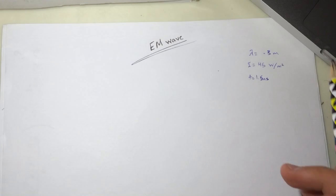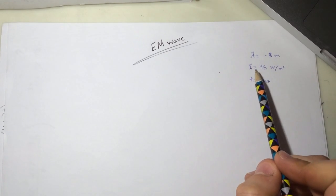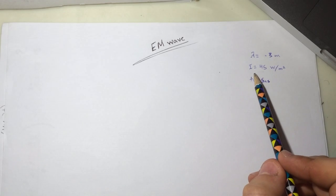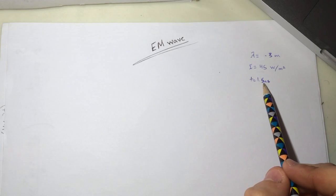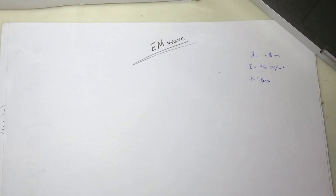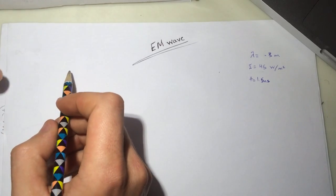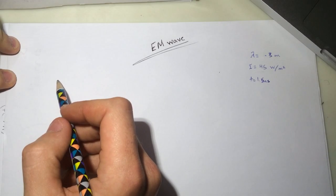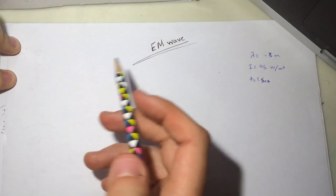They gave us the wavelength of this wave and the average intensity, and they want to know the magnetic field at 1.5 nanoseconds — specifically, the magnitude of the magnetic field. So let's start this problem by finding Bmax.